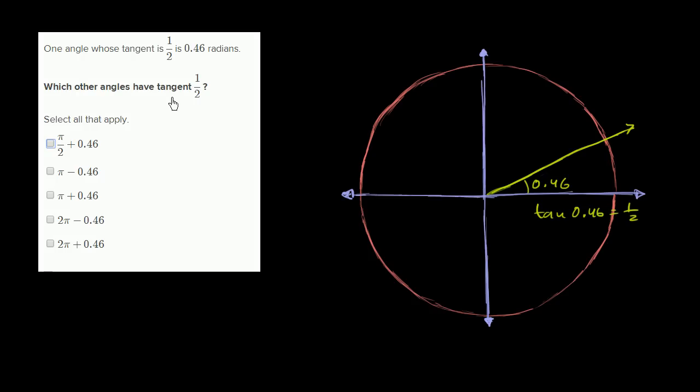Now, what other angles have a tangent of one half? Let's look at these choices. This is our original angle, 0.46 radians plus π over 2. If you think in degrees, π is 180, π over 2 is 90 degrees.